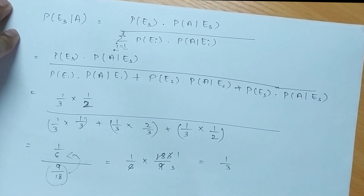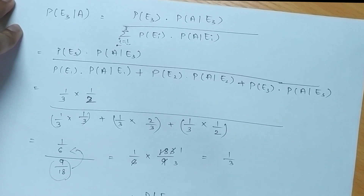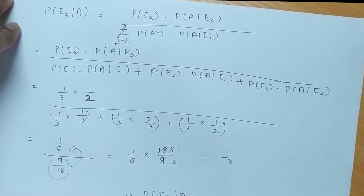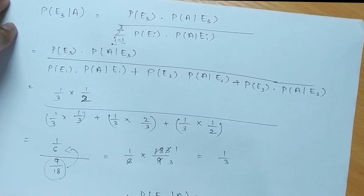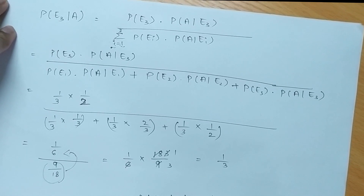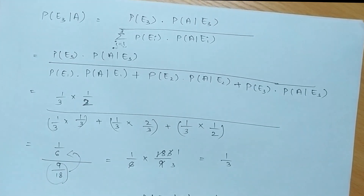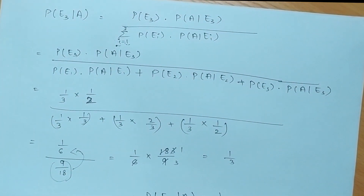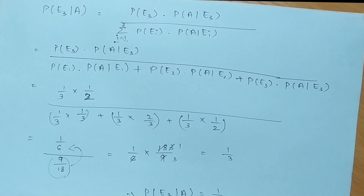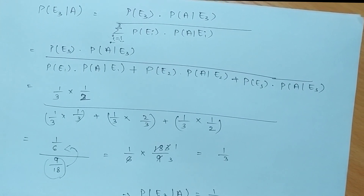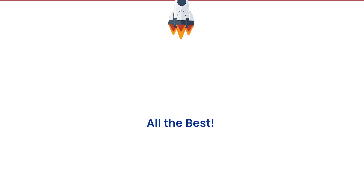Thus, the probability of choosing bag 3 for drawing a white ball is 1/3. Hope you all understood this concept and liked this video. For more concepts on aptitudes and mathematics topics, do comment in the comment section. Thank you.